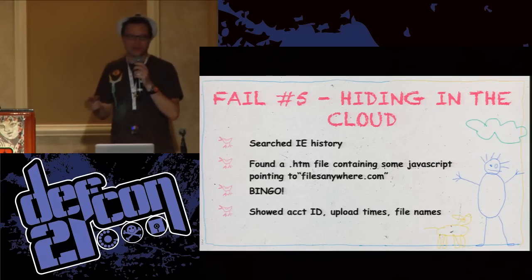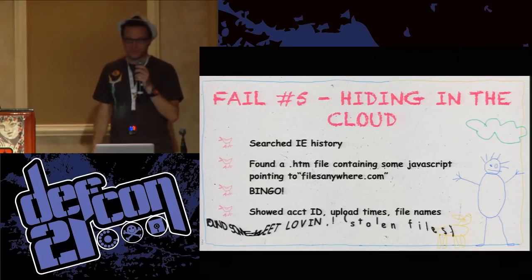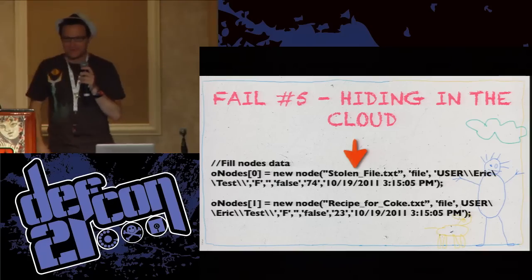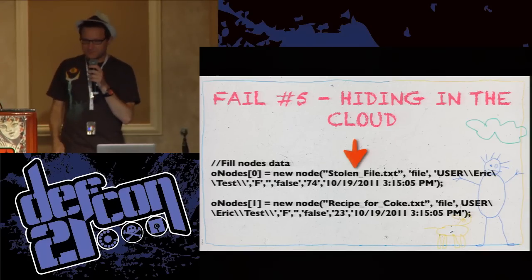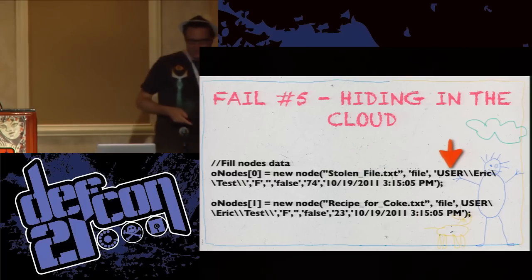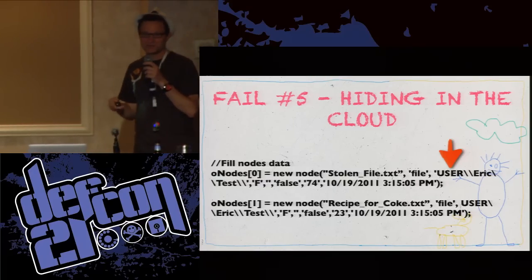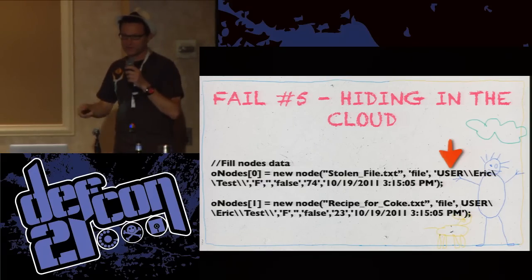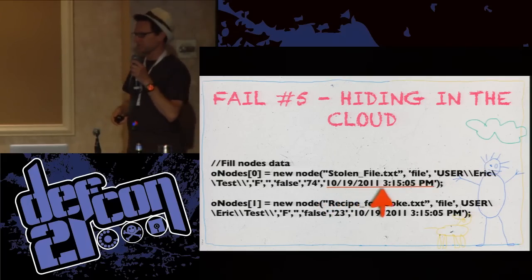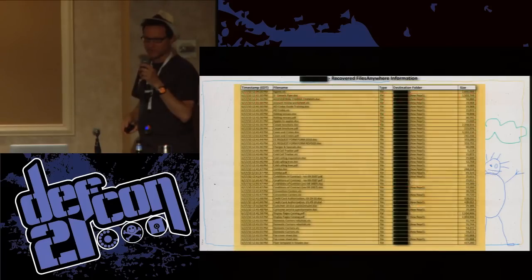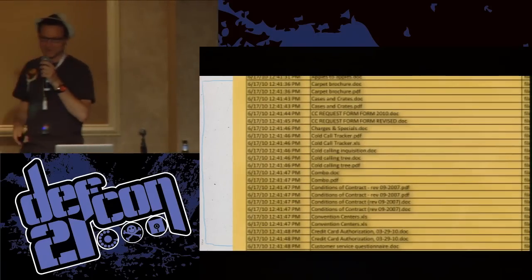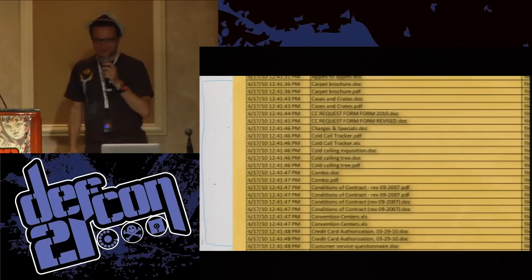What we got from the JavaScript was the account ID, the upload times, the file names — everything. We got stolen files, including things like 'Recipe for Coke' as an example — minor trade secrets. The user account name allowed us to subpoena Files Anywhere and figure out who actually registered the account. We could see the folder it was in and the date it was uploaded. This is the first page of what ended up being an 80-page Excel report of all the file names this guy uploaded.